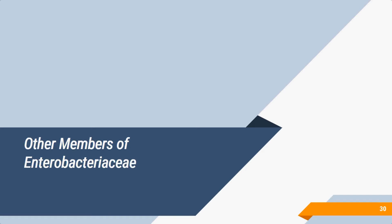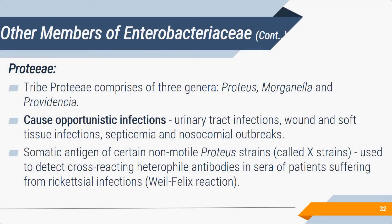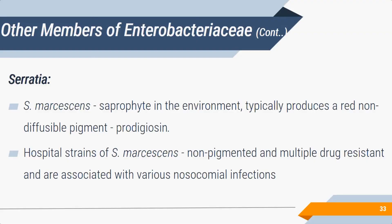Other members of Enterobacteriaceae include Enterobacter, which is similar to Klebsiella but motile, with two species — aerogenes and cloacae — isolated from various clinical specimens. Proteus group — Proteus, Morganella, and Providencia — causes opportunistic infections like UTI, wound infection, and septicemia. Non-motile strains of Proteus are used to detect antibodies against Rickettsia — the cause of typhus fever — in the Weil-Felix reaction.